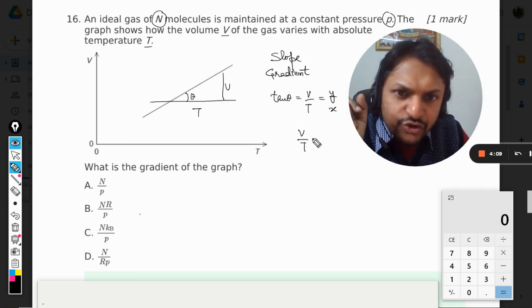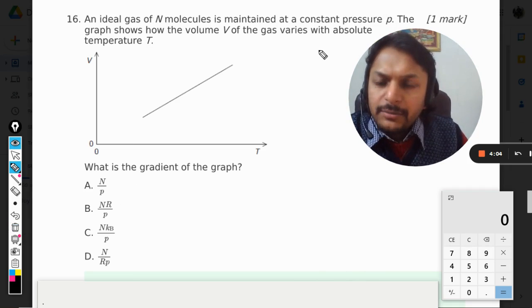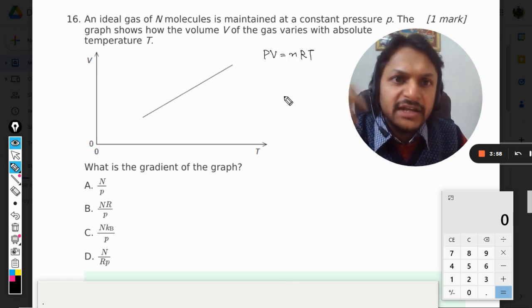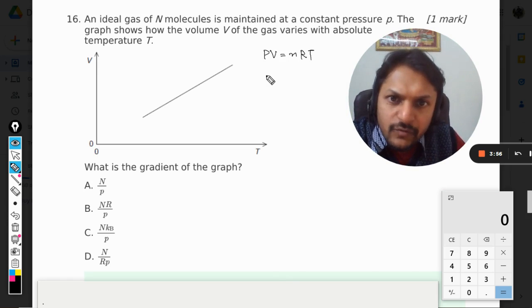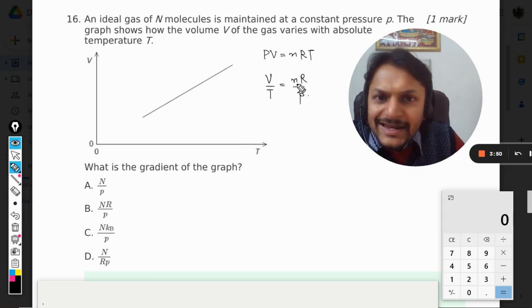What is V by T? That is the question. Because it's an ideal gas, let us concentrate on the ideal gas equation: PV = nRT. We want V by T, so V by T will be nR divided by P.